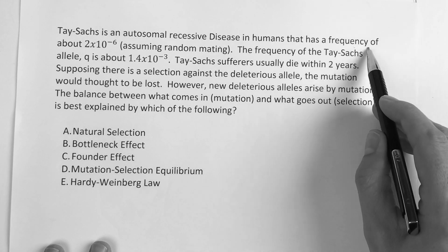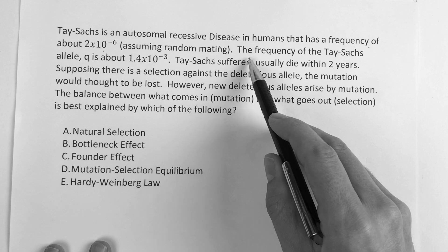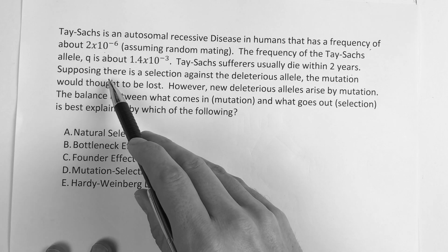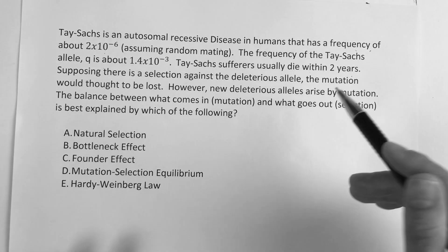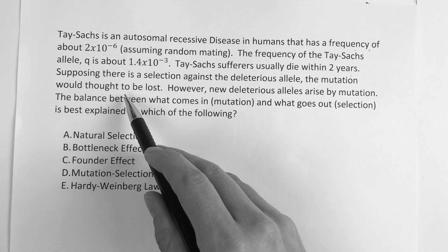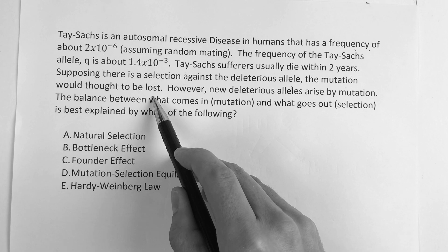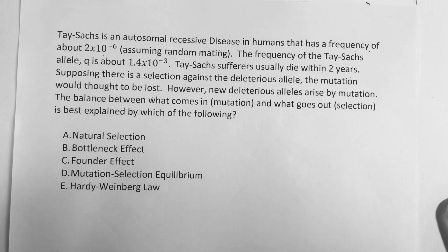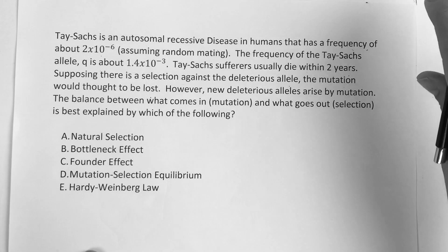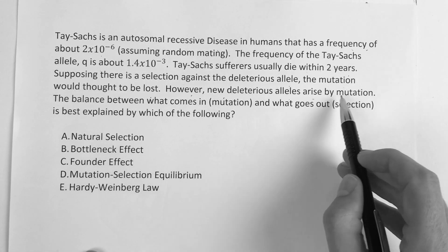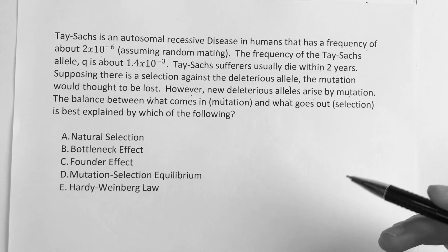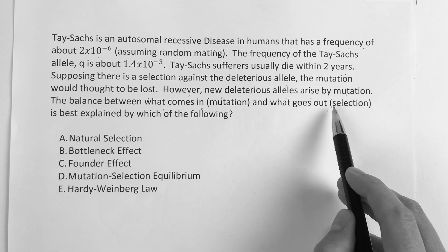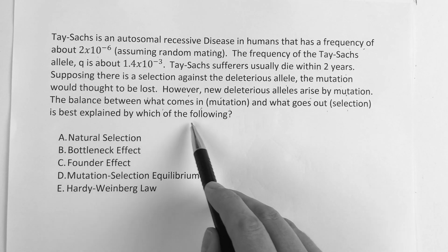The third question: Tay-Sachs is an autosomal recessive disease in humans with a known allele frequency q. Assuming random mating, Tay-Sachs sufferers usually die within two years. Supposing there is selection against the deleterious allele, the mutation would be thought to be lost — if nobody chose to have children with a carrier, you'd expect that gene to eventually disappear from the pool. However, new alleles arise by mutation through de novo randomness. The balance between what comes in and what goes out is best explained by which of the following?